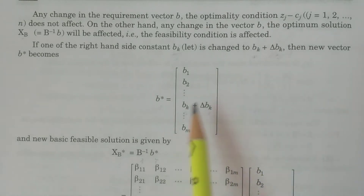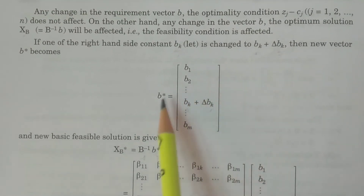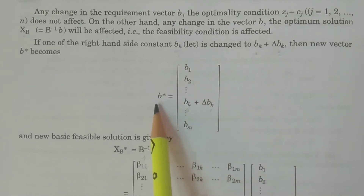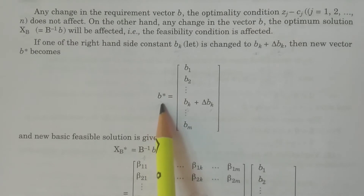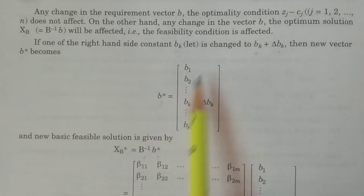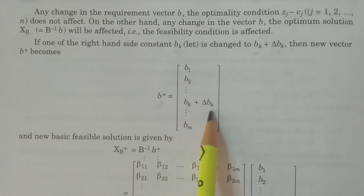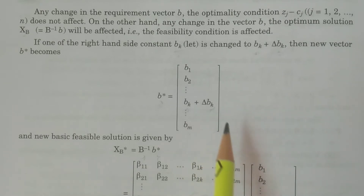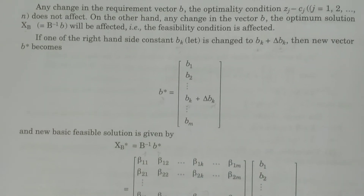That is why we consider the requirement vector B with components B1, B2, ..., Bk, ..., Bm. Now B star — the new vector for the new LPP — takes the change in Bk. B star is the new vector: B1, B2, ..., Bk plus delta Bk, ..., Bm. So instead of Bk, we have now considered Bk plus delta Bk. Now let us see the feasible solution.